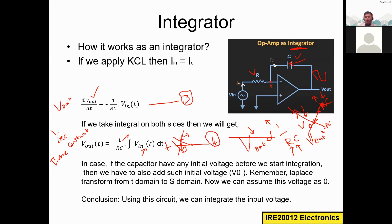We will start Laplace transforms soon after completing filters and oscillators. There we'll analyze circuits in both the time domain and the s-domain, solving examples with capacitors having no initial charge and cases with an initial charge. Logically, if there's no initial charge, the output depends only on the current input. If there's an initial charge, it must be added to the output.